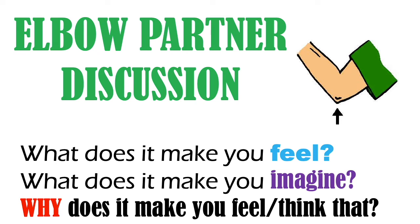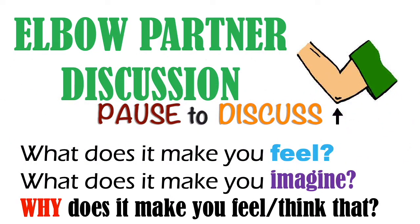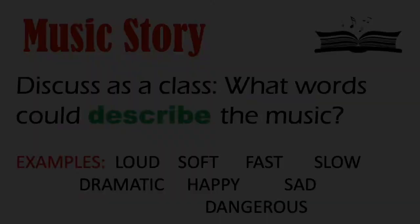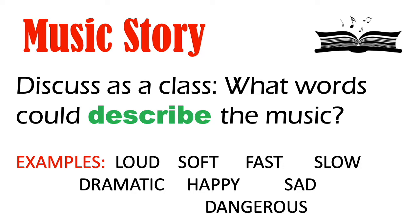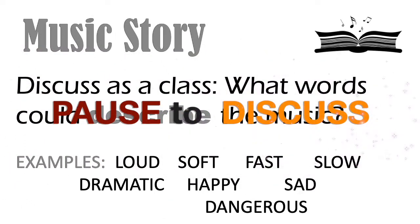Welcome back. If you've had enough think time, you can move on to your elbow partner discussion and chat with someone near you. What did that music make you feel? What did it make you imagine? And why did it make you think or feel that? Your partner may have had completely different ideas to you and that is okay — everyone's imagination is different. Now discuss as a whole class or with a friend: what words could you use to describe the music? Examples like sad, happy, exciting, dangerous — but come up with your own words to describe the piece of instrumental music you just listened to.